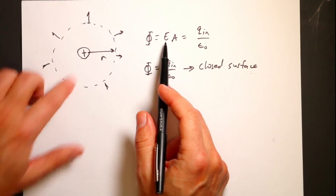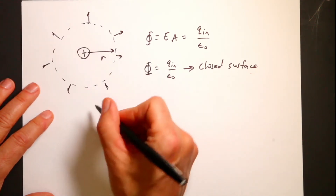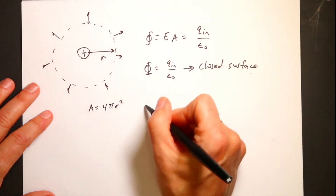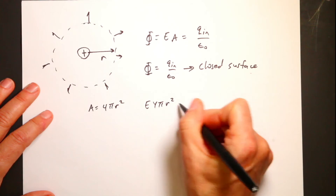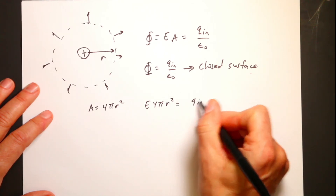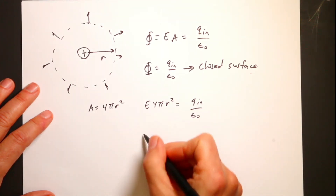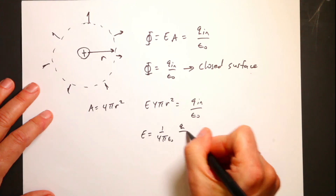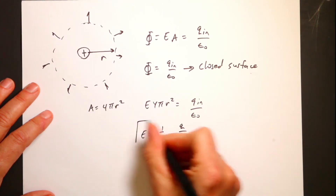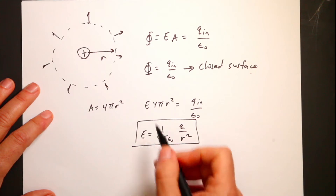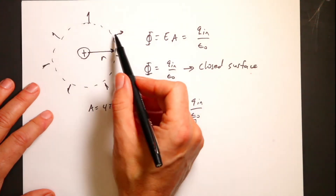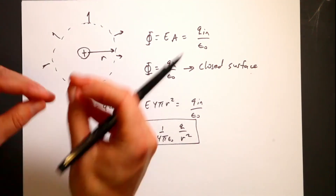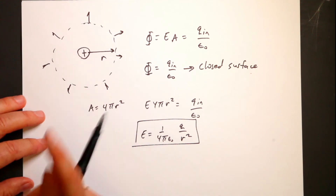Going back, I have a sphere and I know the area of a sphere is 4π r squared. So E times 4π r squared equals Q over epsilon-naught. Solving for E, I get E equals 1 over 4π epsilon-naught times Q over r squared. This gives me the magnitude of the electric field, not the vector value — I already chose the direction in order to do this calculation, which is why it's kind of a trick.